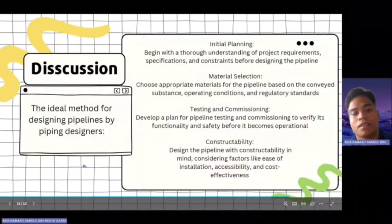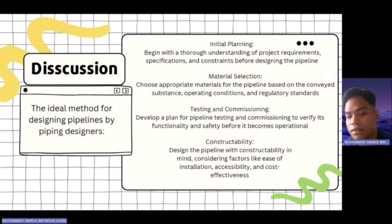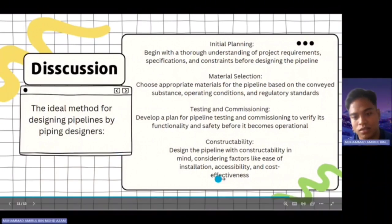For discussion, the ideal method for designing pipelines by piping designers: first, initial planning begins with thorough understanding of project requirements, specifications, and constraints before designing the pipeline. Second, material selection: choose appropriate materials for the pipeline based on the conveyed substance, operating conditions, and regulatory standards. Third, testing and commissioning: develop a plan for pipeline testing and commissioning to verify its functionality and safety before it becomes operational. Constructability: design the pipeline with constructability in mind, considering factors like ease of installation, accessibility, and cost-effectiveness. That's all from me, thank you.